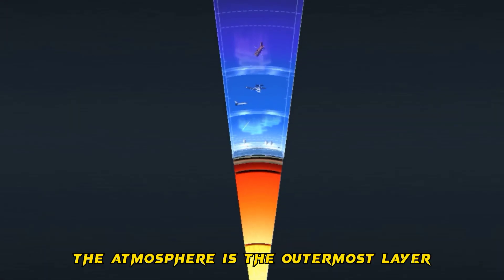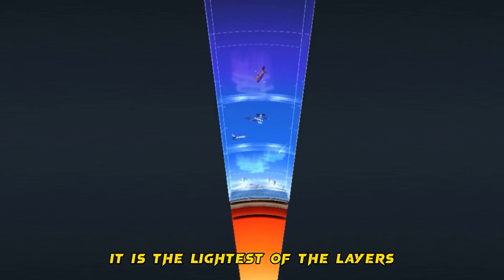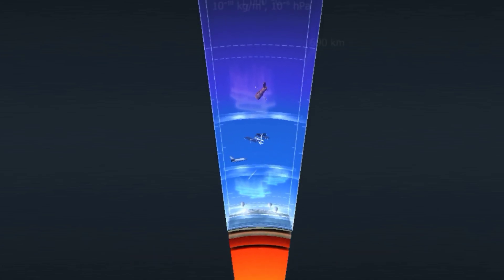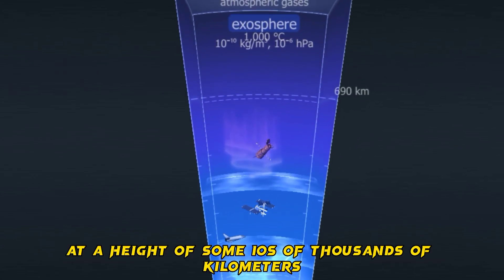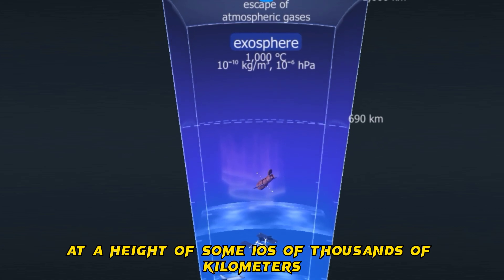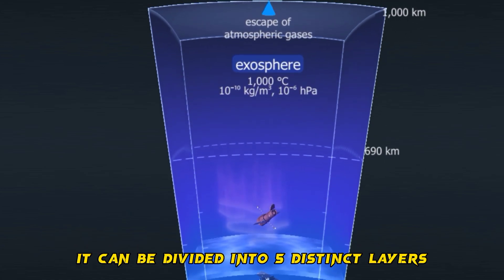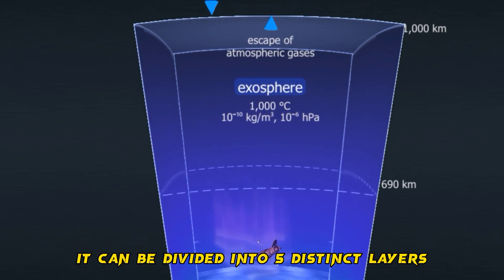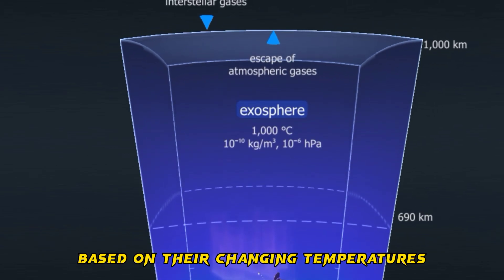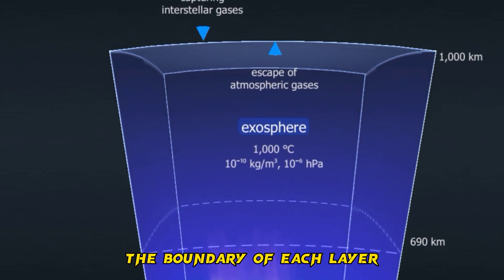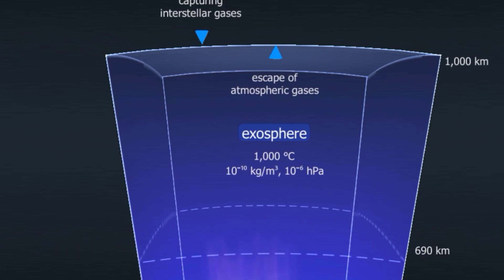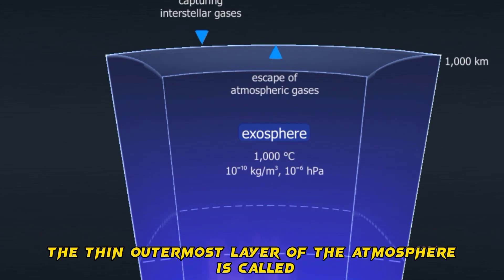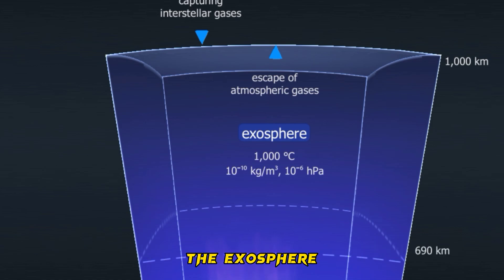The atmosphere is the outermost layer. Composed of gases, it is the lightest of the layers. The atmosphere has no definite boundary — it fades into outer space at a height of some tens of thousands of kilometers. It can be divided into five distinct layers based on their changing temperatures. The boundary of each layer can be found where temperature inversion occurs. The thin, outermost layer of the atmosphere is called the exosphere.